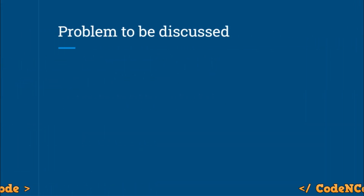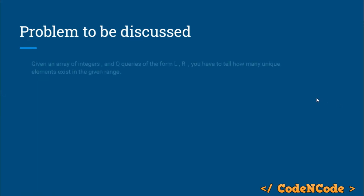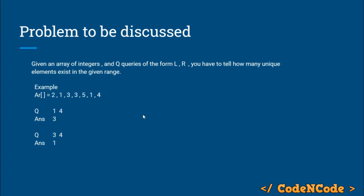The problem to be discussed is this: you are given an array with N elements and Q queries. In each query you are given two indices L and R, and you have to tell how many unique numbers are there in the range L to R. For example, in the range 1 to 4 there are three unique elements, in the range 3 to 4 there is only one unique element, that is only three.